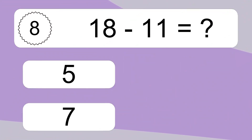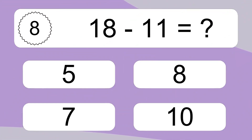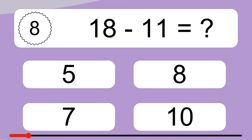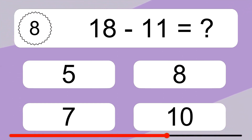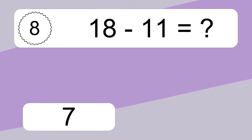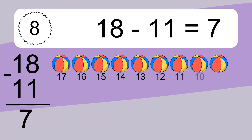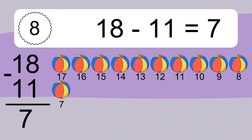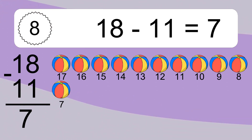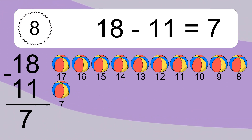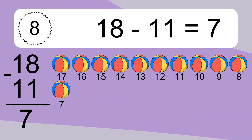18 minus 11 equals what? 18 minus 11 equals 7. Let's count it. 17, 16, 15, 14, 13, 12, 11, 10, 9, 8, 7.